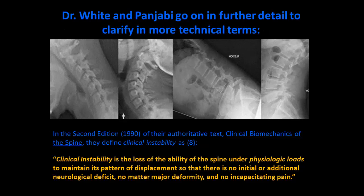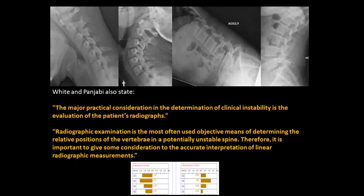White and Panjabi went on to explain in their 'Clinical Biomechanics of the Spine,' in more technical terms, that clinical instability is the loss of the ability of the spine under physiological loads to maintain its patterns of displacement so that there is no initial or additional neurological deficit, no major deformity, and no incapacitating pain. Again, it is abnormal spinal motion and abnormal spinal position causing pressure on the nerve.